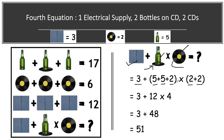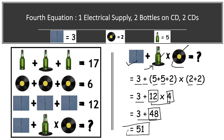Applying BODMAS, we solve brackets first: five plus five equals ten, ten plus two equals twelve for the first bracket. The second bracket: two plus two equals four. Now multiplication: twelve times four equals forty-eight. Finally, adding the electric supply: three plus forty-eight equals fifty-one. The answer is 51!